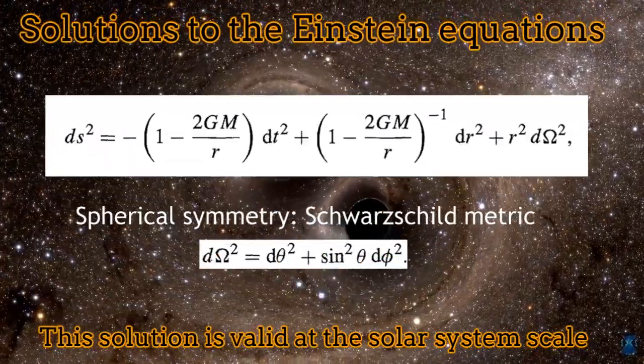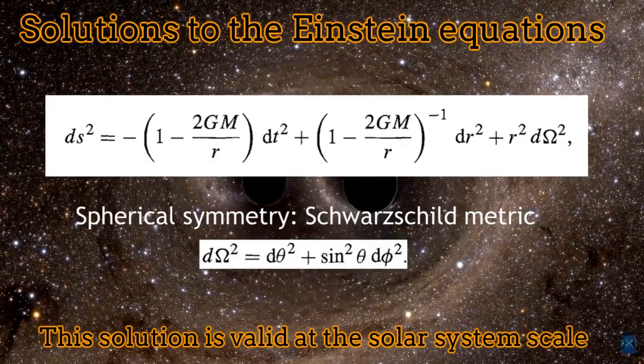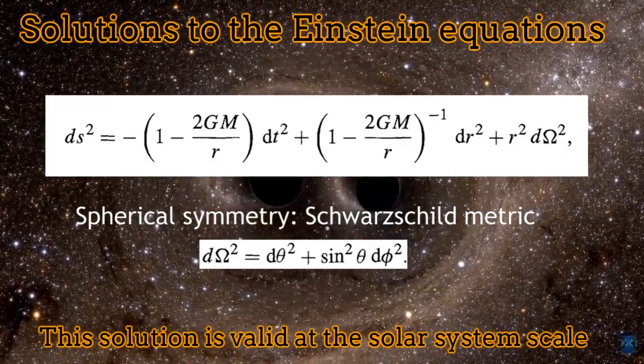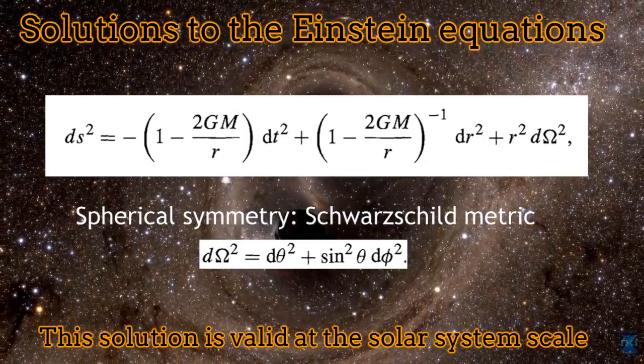The simplest solution to the Einstein equations is the Schwarzschild solution, which corresponds to the metric appearing on the screen. This metric is spherically symmetric.